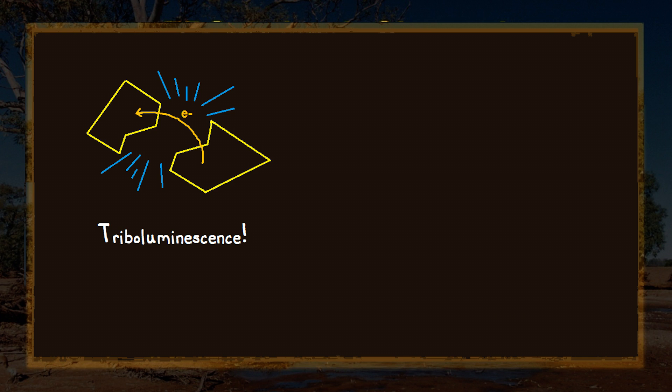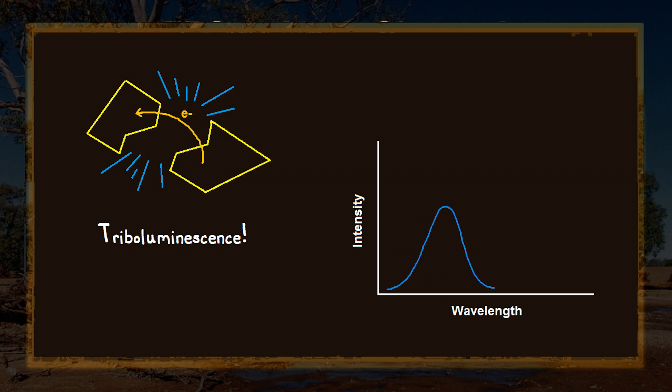Now the problem with this is the wavelength from excited nitrogen peaks in the invisible ultraviolet spectrum, and we're only seeing that tailing edge as it passes into the violet and blue colours.